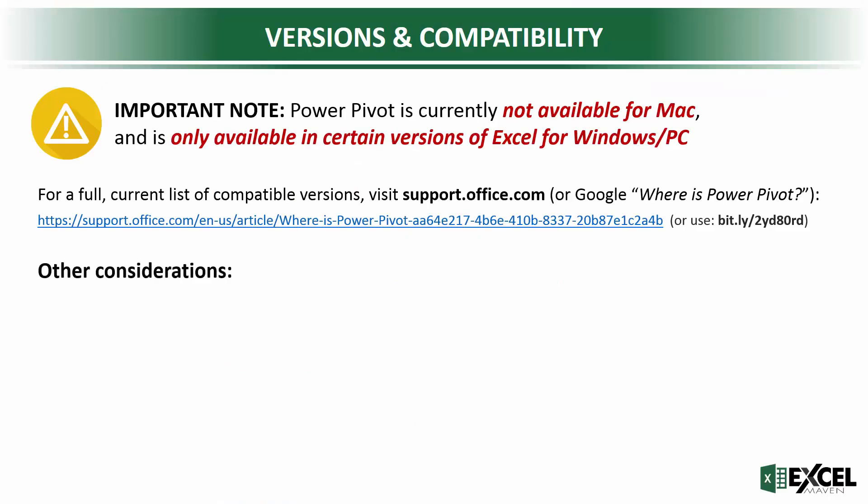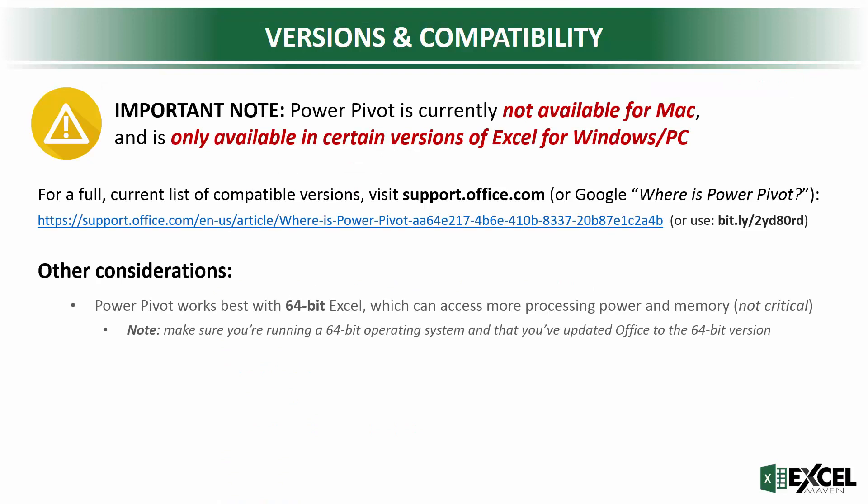Now a few other quick considerations. Number one, PowerPivot does work best with a 64-bit version of Excel. It's not critical — you can run PowerPivot with a 32-bit version — it's just that 64-bit has access to more processing power and more memory, so it's a bit faster and a bit more stable. If you are planning to make the upgrade to 64-bit, make sure that you're running a 64-bit operating system and that you've updated Office to the 64-bit version as well.